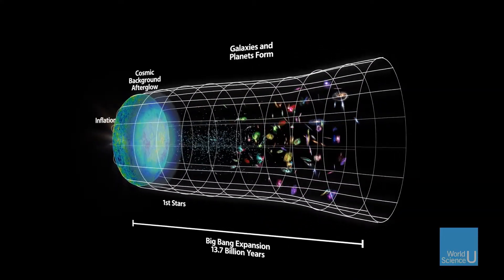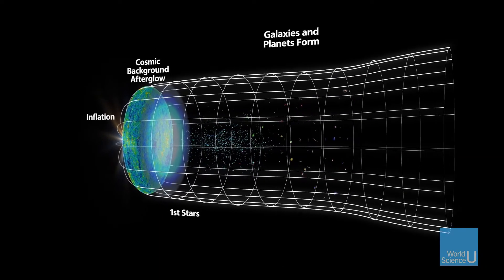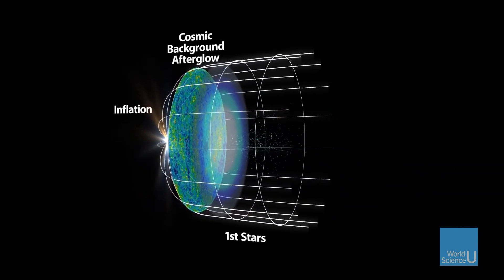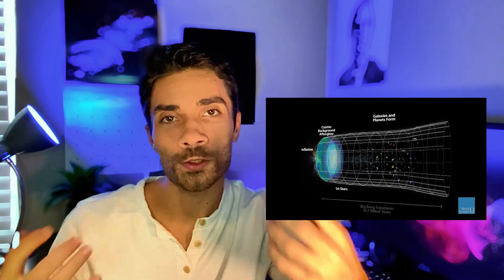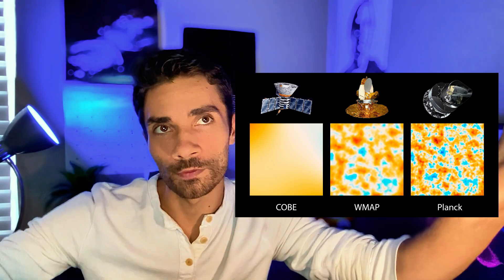If we were to take all of the galaxies and everything we see and contract it — in other words, go back in time — we can see that the entire universe was once a smaller, hotter, denser place. We can do physics to understand what happened at that state, at the Big Bang itself, the rapid inflation event. And we can also observe the Big Bang today with the CMB radiation.